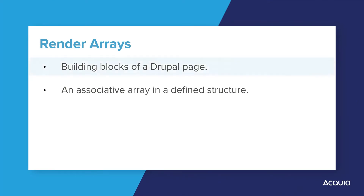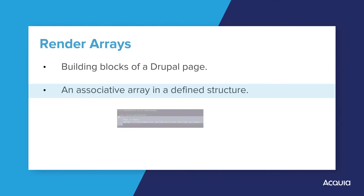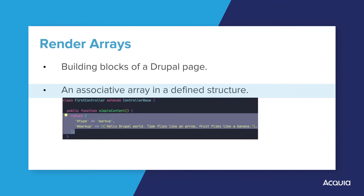Render arrays are the building blocks of a Drupal page. A render array is an associative array which conforms to the standards and data structures used in Drupal's render API. The render API is integrated with the theme API and a full understanding of the render API is not required for our purposes of module development. In fact, we have already used render arrays. When we developed the first controller of the module back in Unit 2 of this course, in two different places we returned an array with the keys of #type and #markup. Those were render arrays!